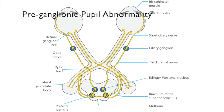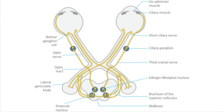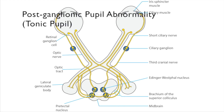Damage to the pre-ganglionic segment of the third cranial nerve may affect its parasympathetic efferent pupil loop and cause an ipsilateral mydriasis and impairment of pupil constriction to light. Ipsilateral ptosis and ocular ductional deficits will always be present.